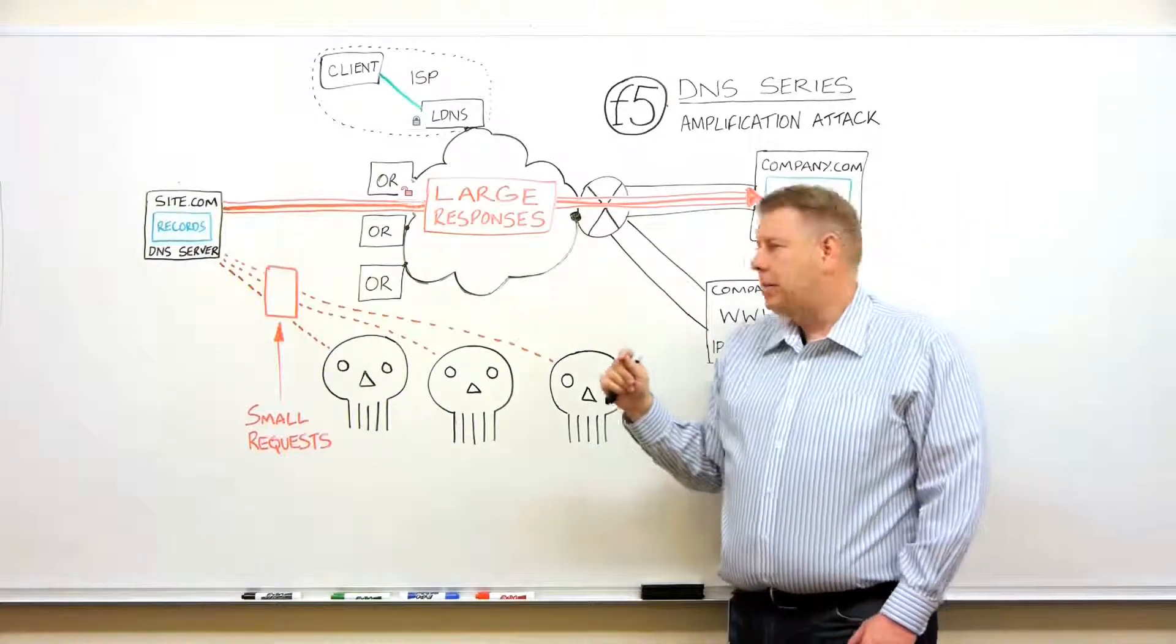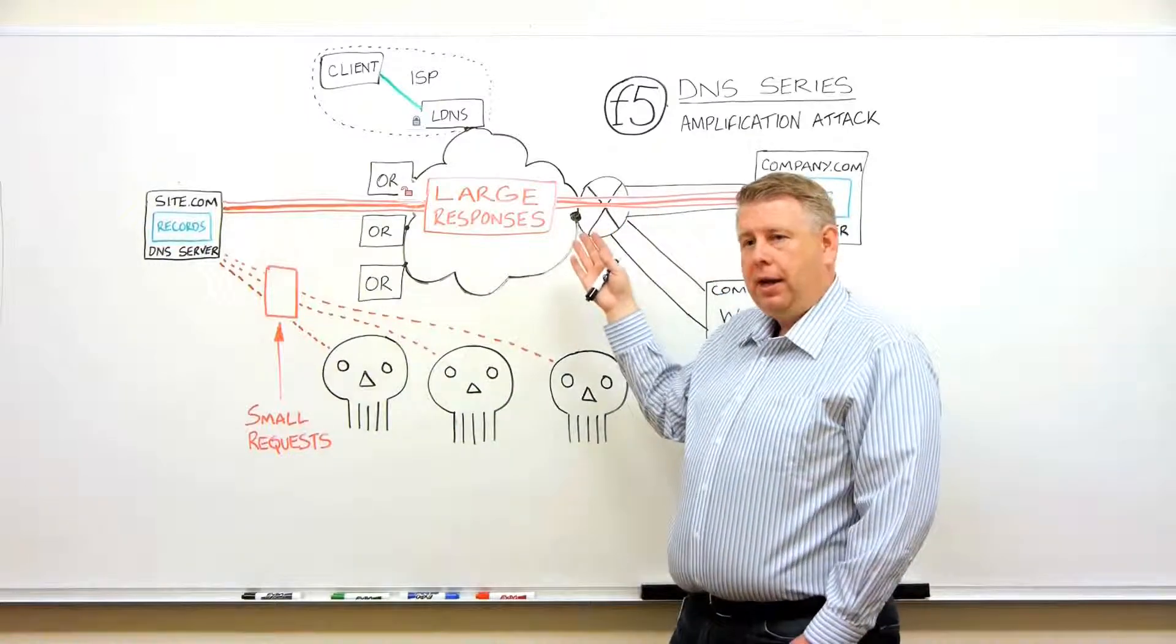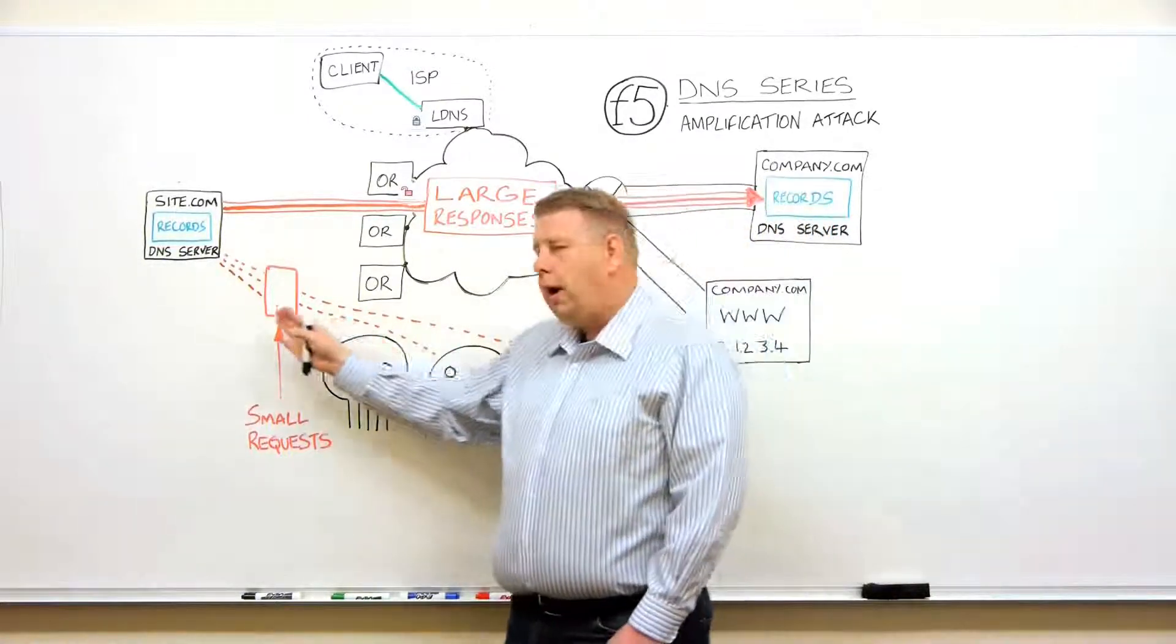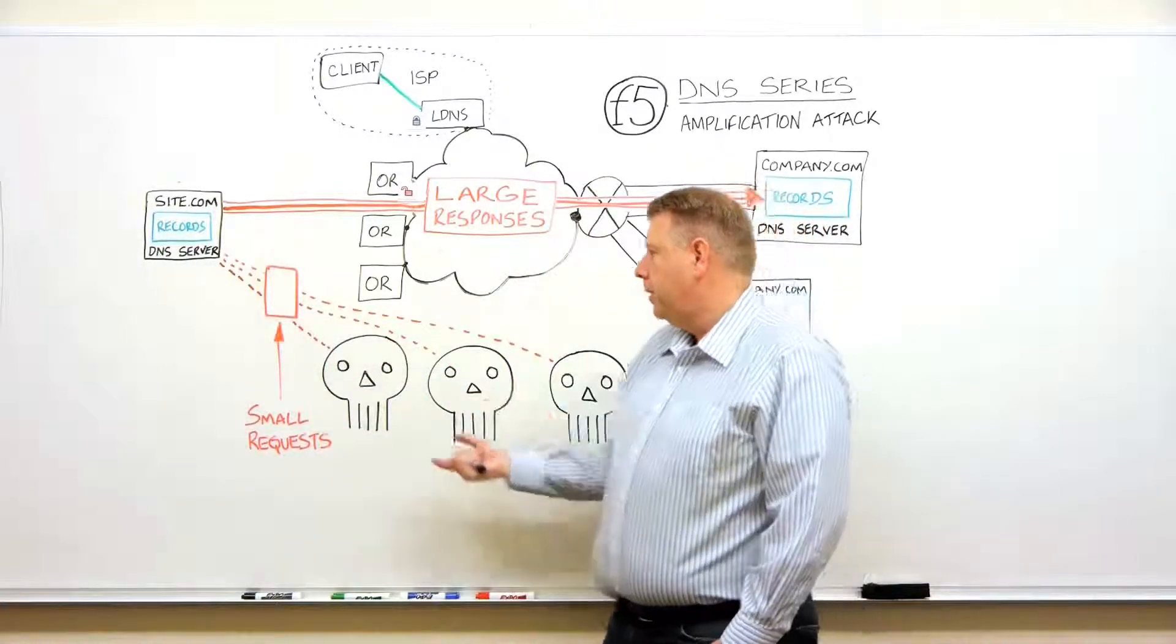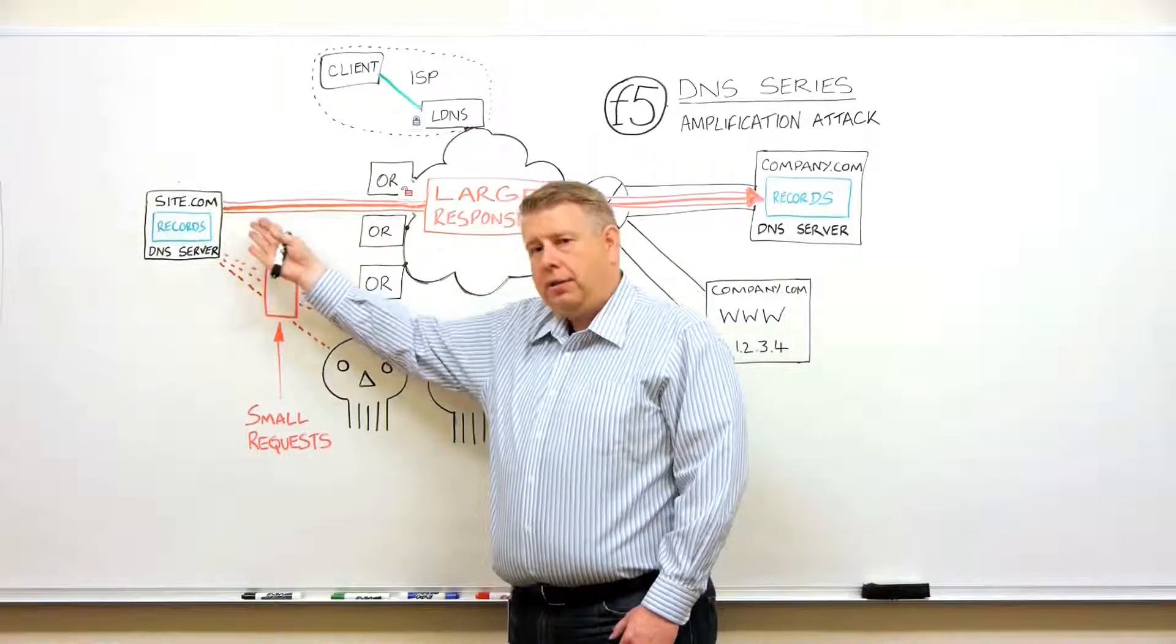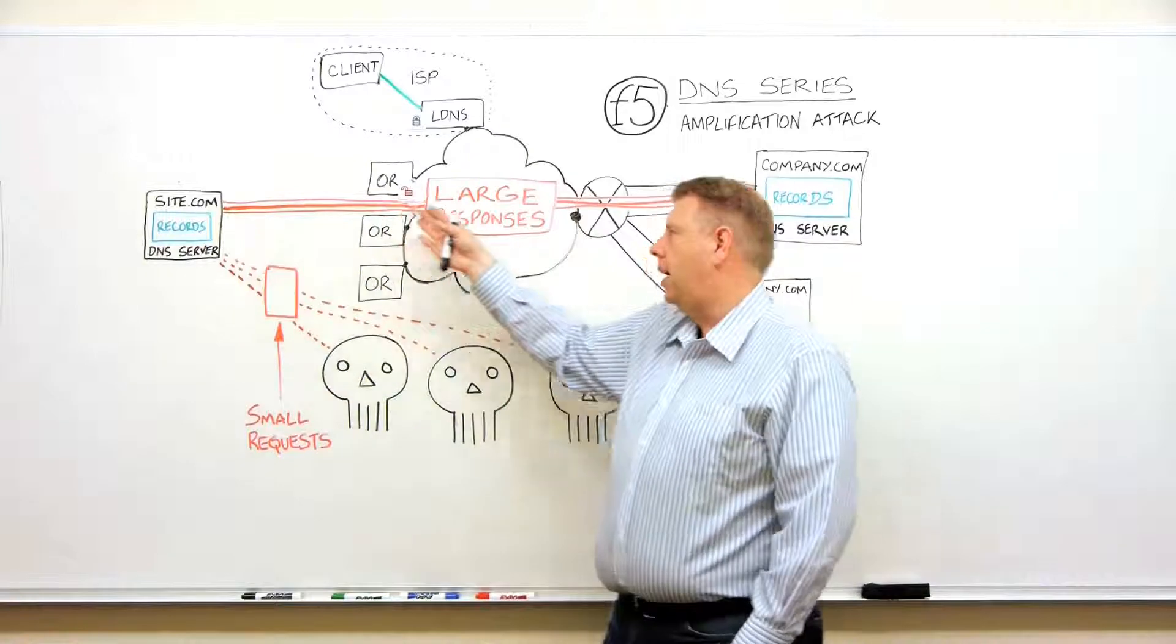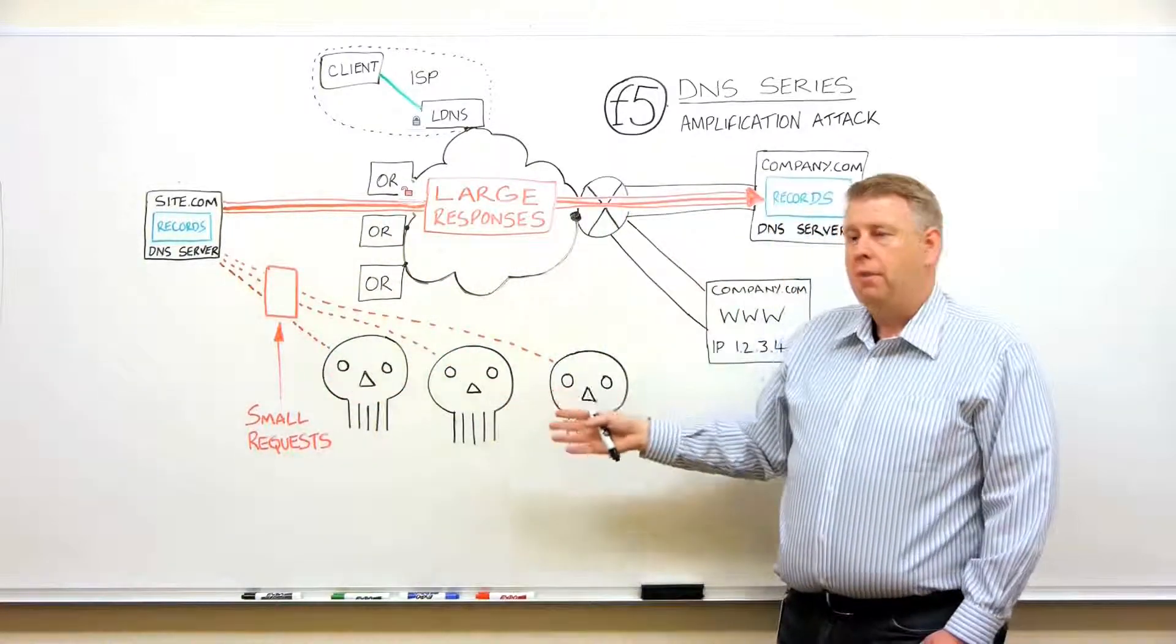Why does this happen? Well, it turns out that the nature of the domain name system has unequal information sizes. Your query, the request for that address, is usually very small. And then the response typically is just a little bit larger, maybe only double the size. But there are certain record types you can ask for that are much larger.